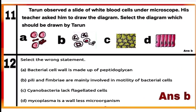Question 11: Tarun observed a slide of white blood cells under a microscope. His teacher asked him to draw the diagram. Option B is the diagram that should be drawn for white blood cells. Diagram A is of red blood cells, diagram C is of mesophyll cells, and diagram D is of columnar epithelial cells.